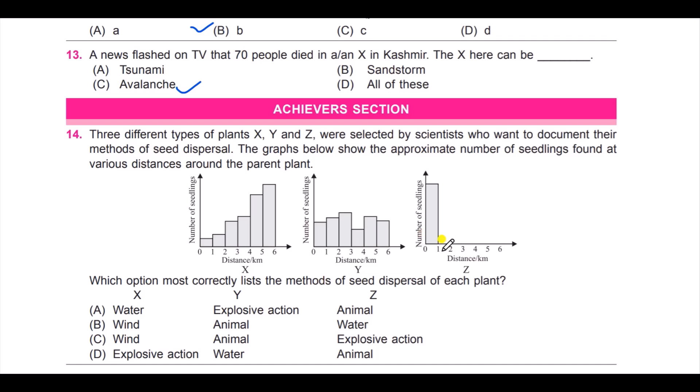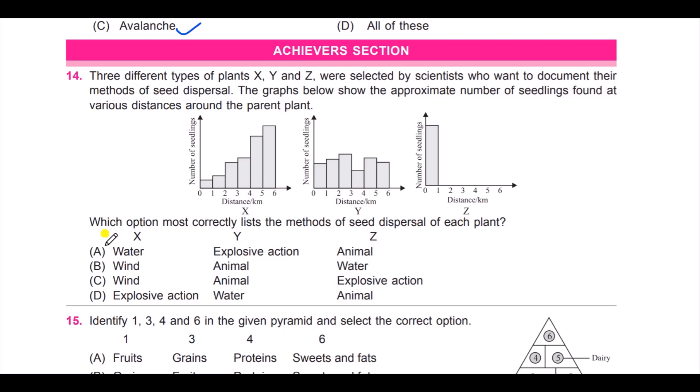Which option most correctly lists the method of seed dispersal of each plant? This is X, Y, and Z, number of seedlings and distance in kilometers. Look at the options: option A, water, explosive action, animal; B, wind, animal, water; C, wind, animal, explosive action; and D, explosive action, water, animal. Which of the following option correctly lists the methods of seed dispersal in each plant? And the answer is C: wind, animal, explosive action.